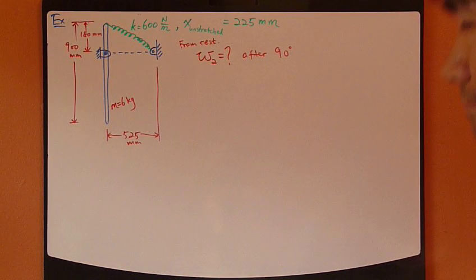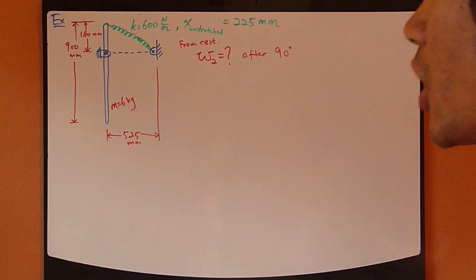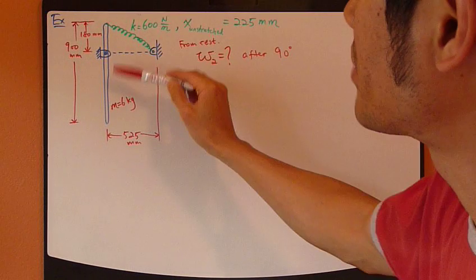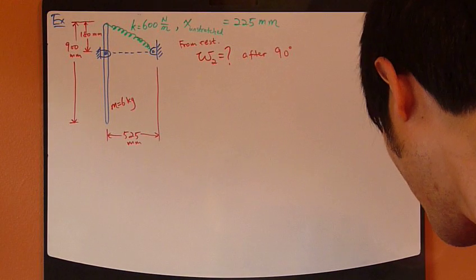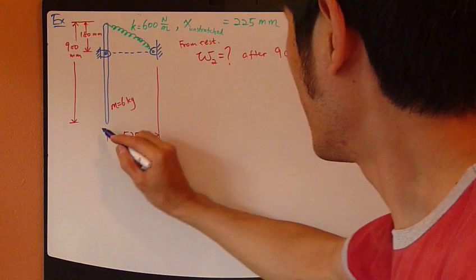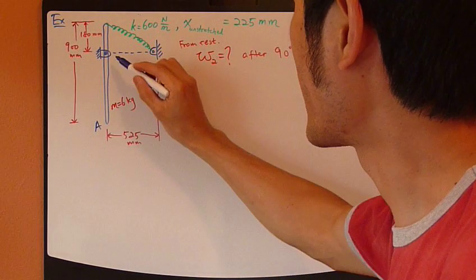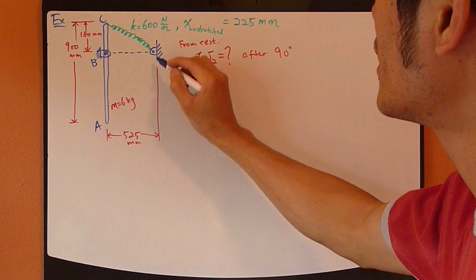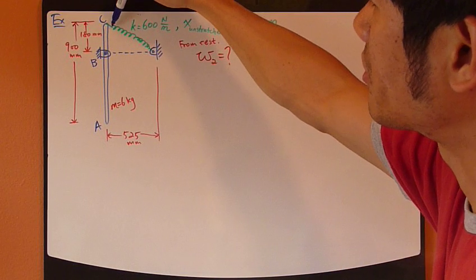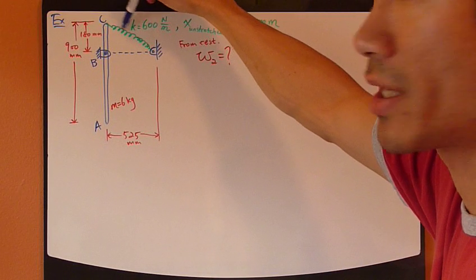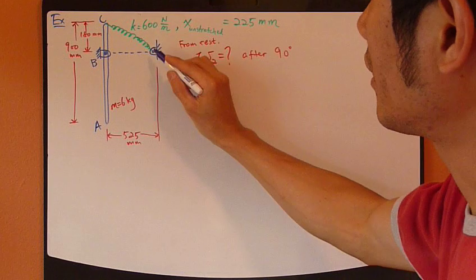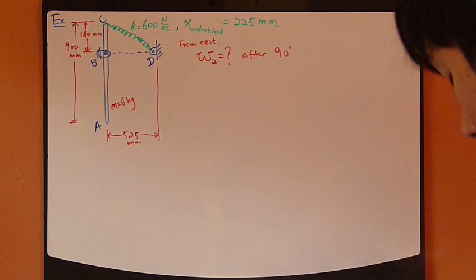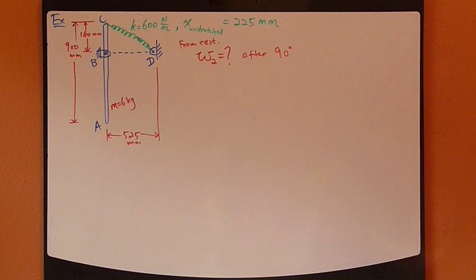Let's look at this example. This example includes a rod — a metal rod — pivoted at a point. The bottom of the rod is called point A, the pivot is called point B, up here is point C, and at point C there's a spring attached. The other end of the spring is attached to another pivot, point D, which is a fixed point.